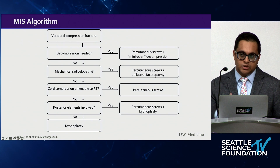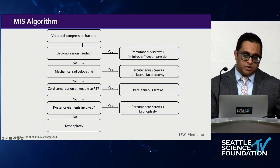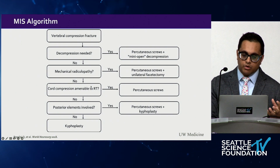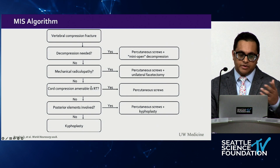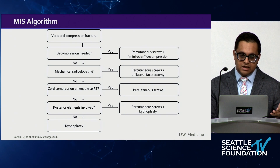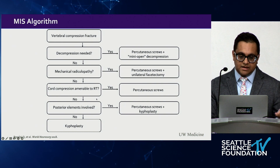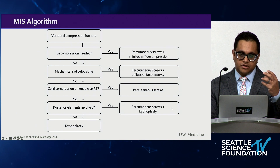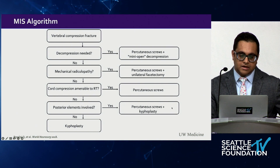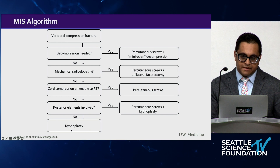If decompression is not needed but there is cord compression we're concerned about, we do cement augmentation at the tumor level plus percutaneous screws above and below. Some tumors very sensitive to radiation don't need decompression at all. If the fracture extends into the posterior elements, we do percutaneous screws plus kyphoplasty, as long as there is no significant concern of cord compression at the tumor level. If the posterior elements are not involved, a simple kyphoplasty suffices.